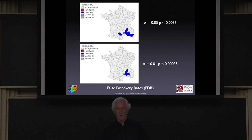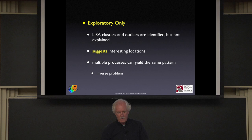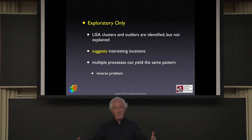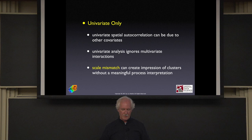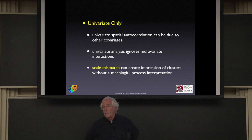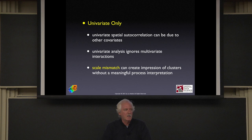A couple of closing points: this is exploratory analysis — it suggests interesting locations. We identify pattern, not process. Multiple processes can yield the same pattern — apparent contagion and real contagion produce the same pattern with different processes. The analysis is also univariate, and there can be interaction between variables, so univariate autocorrelation can really be because of correlation with something else not included in the analysis.